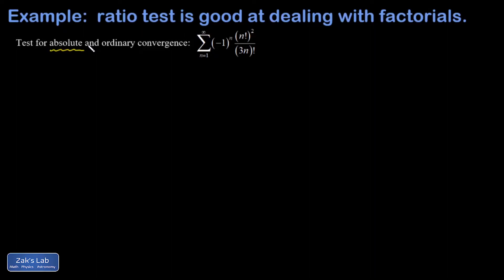So when we're looking for absolute convergence, all we're doing is saying forget about the alternating plus and minus. I'm just going to look at the positive part of each term. And with all these factorials around, I immediately think, let's do the ratio test. It's really good at dealing with factorials.